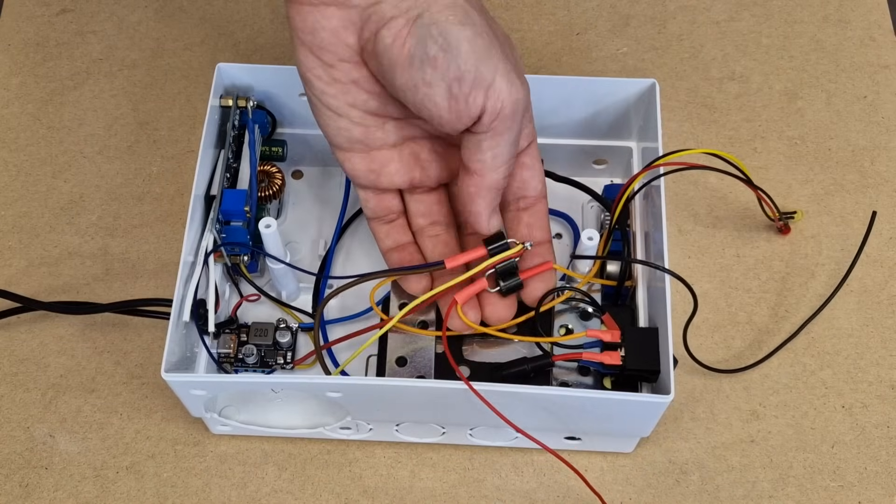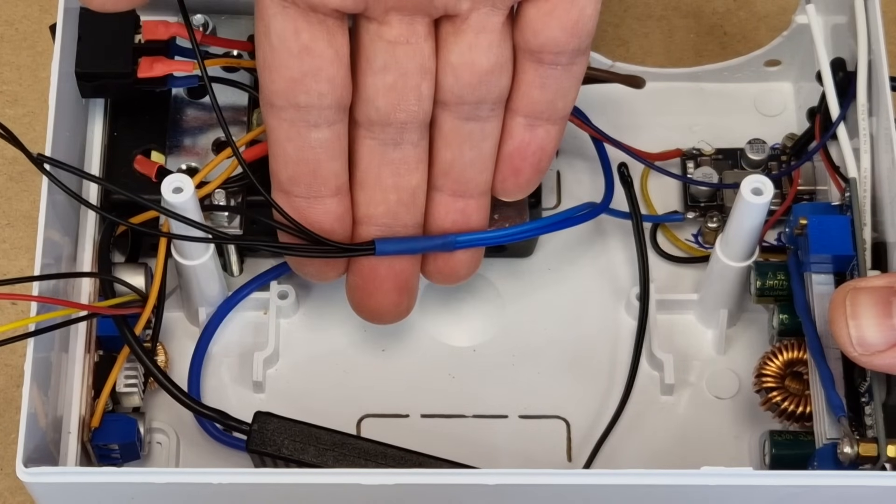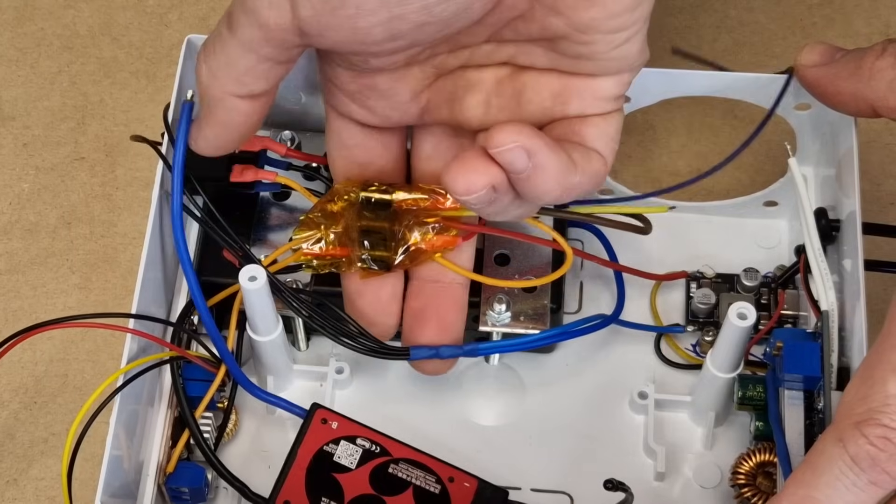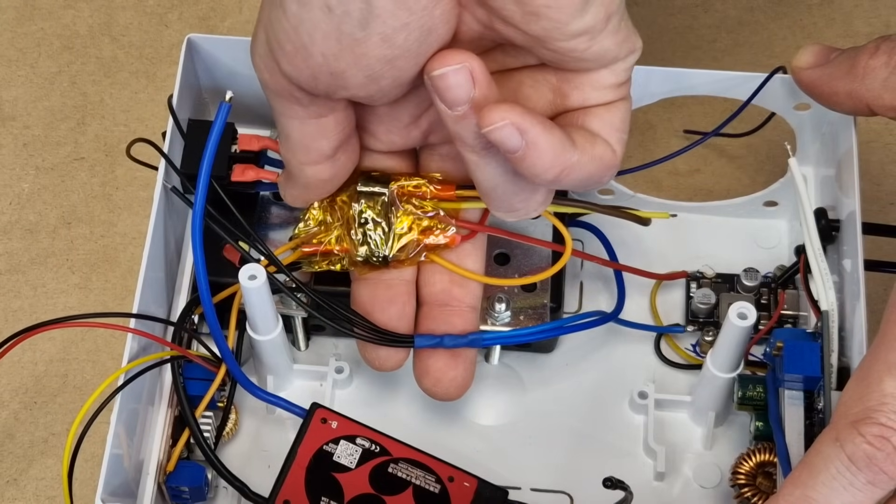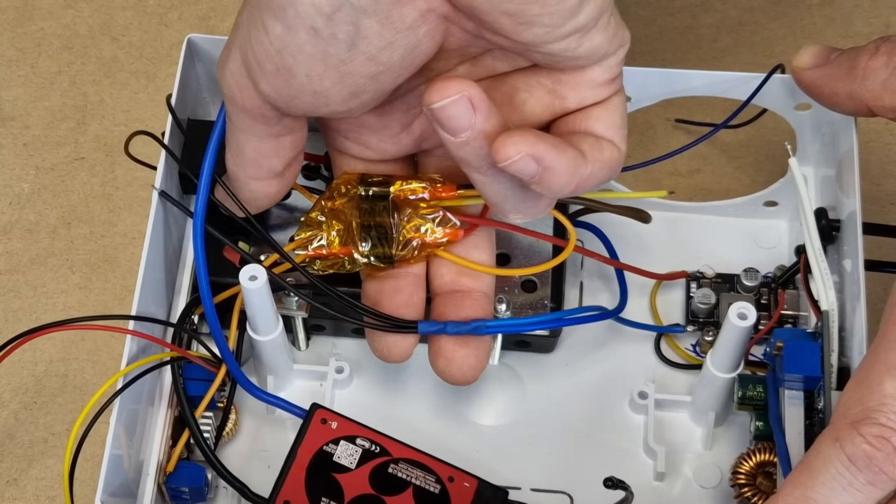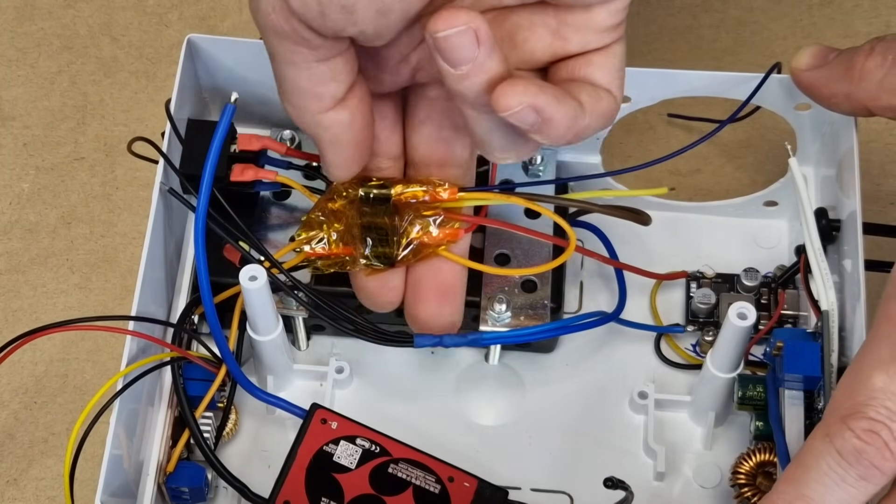This is the diode junction, and these are all the negative wires soldered together. I've insulated the diodes with heat shrink tubes and Kapton tape. They look like shit, I know, but it's safer this way.